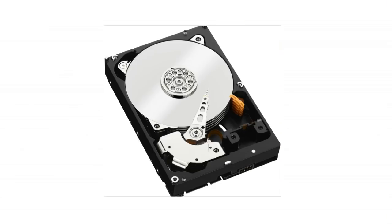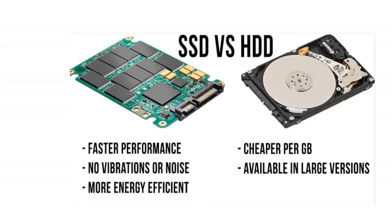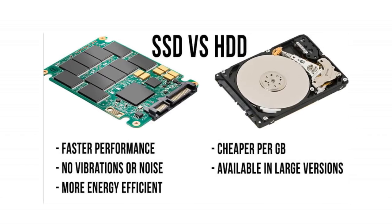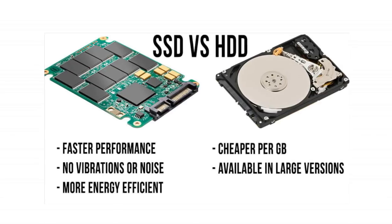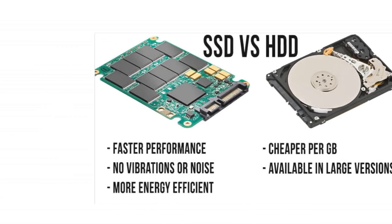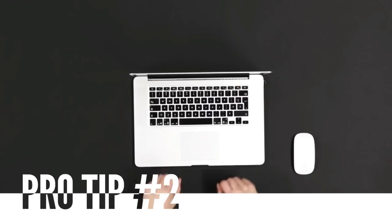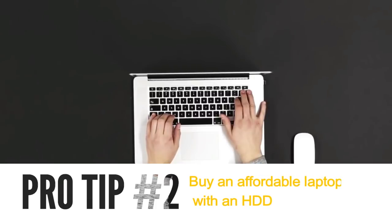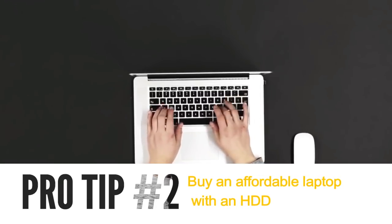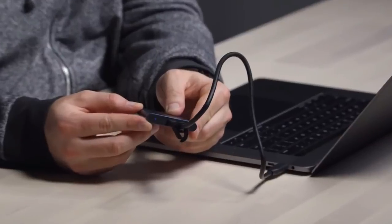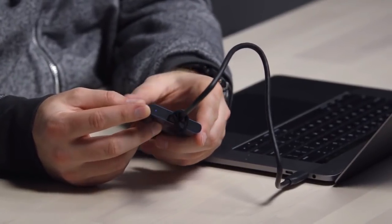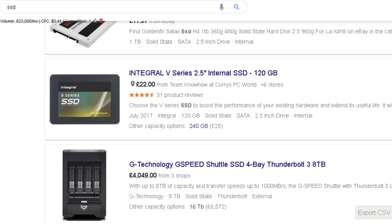Storage devices permanently store and retrieve data on your computer. There are two main types: the Hard Disk Drive (HDD), which is the most common and can store large amounts of data, and the Solid State Drive (SSD), which is the better type — super fast and power-efficient, meaning your battery will last longer. Definitely get an SSD if you can afford it. Pro tip: buy an affordable laptop with an HDD for now if you can't afford an SSD, then add an SSD later and use the old HDD as an external hard drive. Separate SSDs can be found cheaply on Amazon or eBay for around £60 or less.